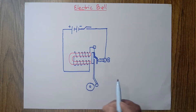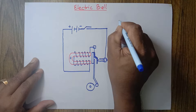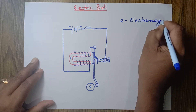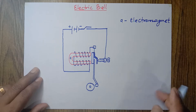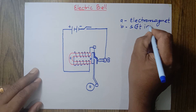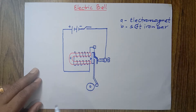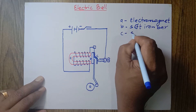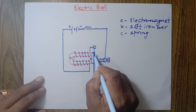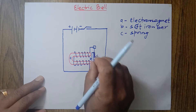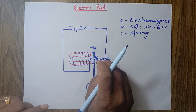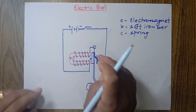Now this is the complete circuit. I want to label all the components. A is the electromagnet. B is the soft iron bar. C is the spring — it is a thin metallic strip. To show it clearly I made it a little thick, but otherwise it is a very thin metallic sheet which can be pressed and will return to its original position when released.